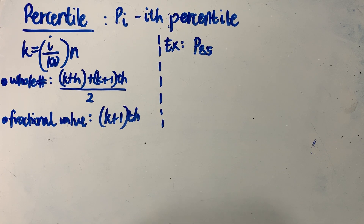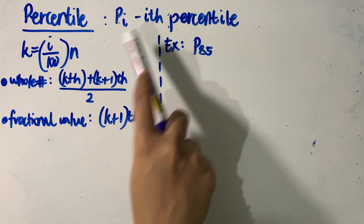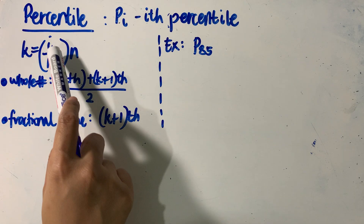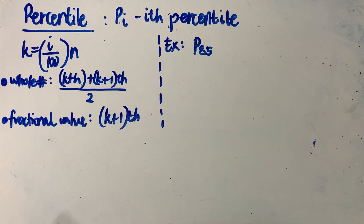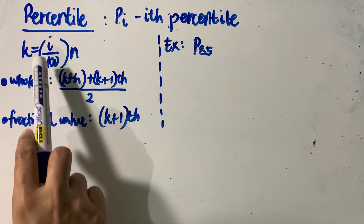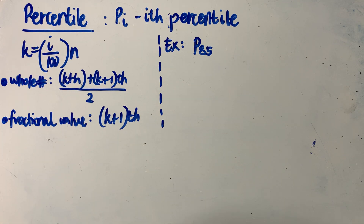How do we compute for the percentile? We denote it by P sub I, referring to it as our Ith percentile. When we say percentile, there will be 100 divisions of our distribution. Thus, the denominator for determining the value of K will be equal to 100. K is computed by dividing I by 100 and multiplying the quotient by N, which is our sample size. There will be two scenarios for the value of K.